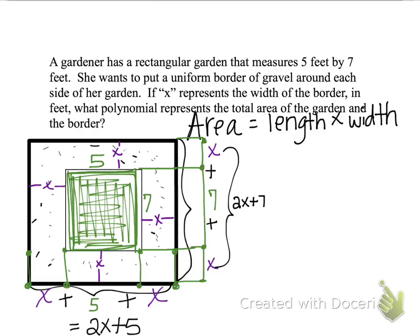So that is the new length and the new width of the overall rectangle which includes the garden and the border. So just to make clear, this X right here is where that X came from and this X right here is where that X came from and the 5 was that 5 up there. Okay.